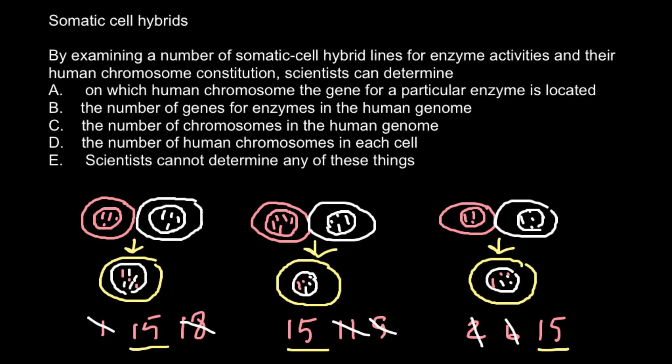So now we can return to our answers and choose the correct answer. Let's start from the end of this list. Answer E: scientists cannot determine any of these things - and this is not true or they wouldn't use this somatic cell hybrid technique. Answer D: the number of human chromosomes in each cell - this is only part of our answer so we can cross out this answer. Also Answer C: the number of chromosomes in human genome.